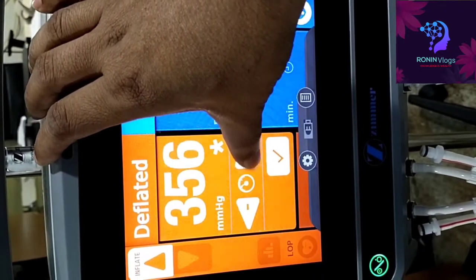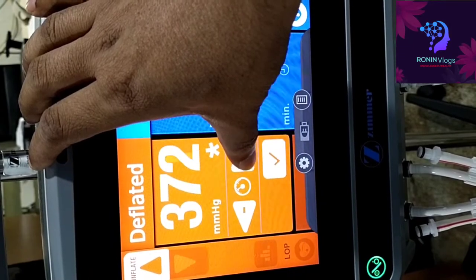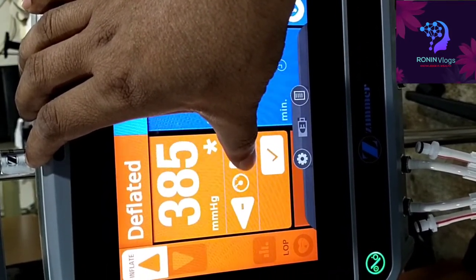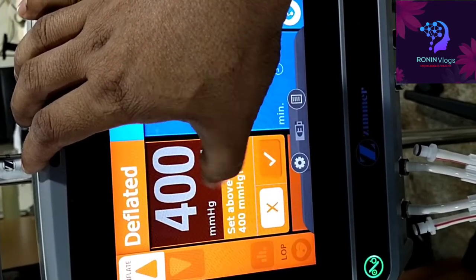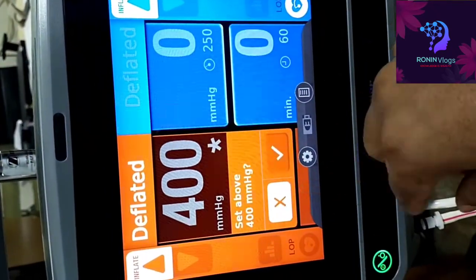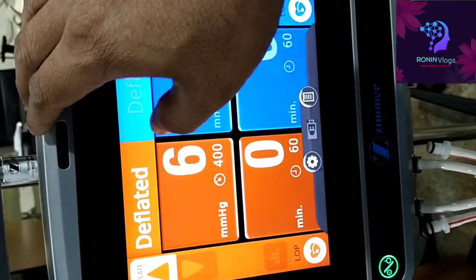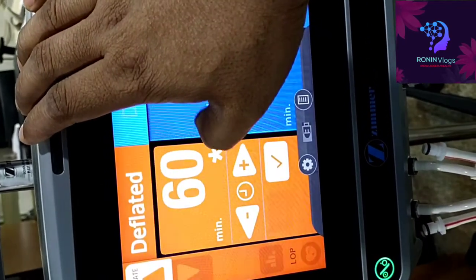This one has high air pressure, 400 mmHg. We need to select okay like that. Now how much pressure the surgeon wants, we can set easily.